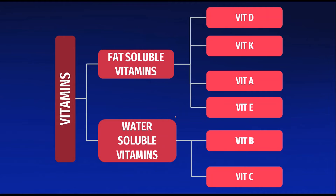Next we will move ahead to types of vitamins. There are two types: fat-soluble vitamins and water-soluble vitamins. As the name suggests, fat-soluble vitamins are absorbed by fat globules that travel through the small intestine and get distributed into the bloodstream. These are stored in the liver and in adipose tissue.